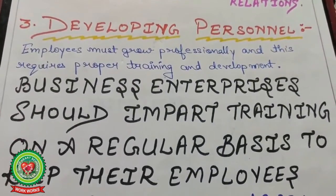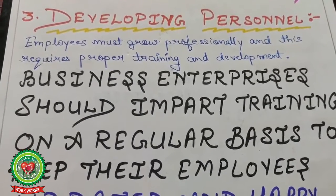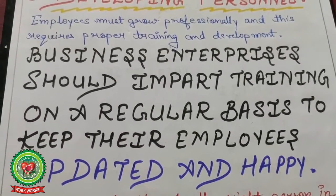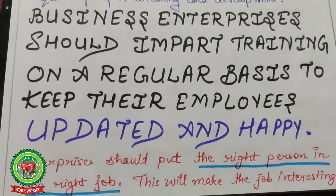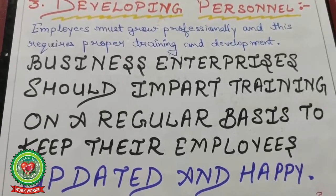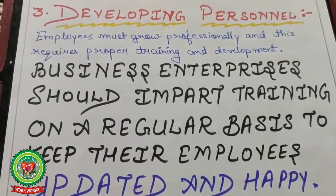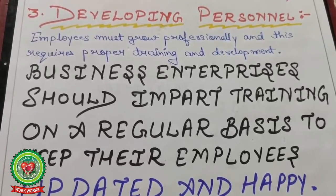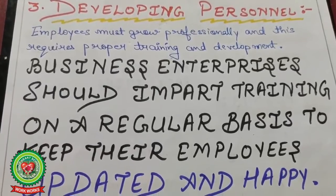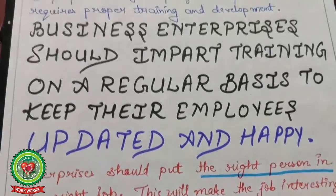The next point is developing the personal — employers must grow professionally, and this requires proper training and development. Business enterprise should impart training on a regular basis to keep their employees updated and happy. For example, previously accounting was done manually in registers, but nowadays computerized accounting software is available, so it is the responsibility of the business to provide training on how to operate it. Enterprises should also put the right person in the right job, which will make the job interesting and reduce monotony.